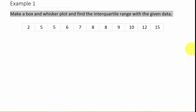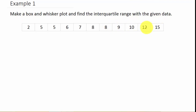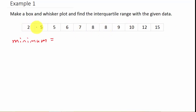So this video is just to show you how to draw a box and whisker plot. For the first example, they want us to make a box and whisker plot and find the interquartile range with the given data. We can count 11 data values. Let's go ahead and find our five-number summary. These are already in order from smallest to largest — if they're not, you need to put them in order. Our minimum value is 2 and our maximum value is 15.